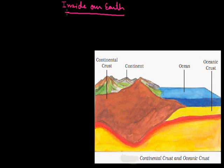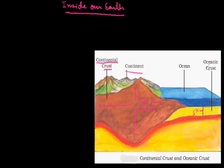Before starting the next topic, let us clear this diagram. As you can see here, this part of our earth is called the continental crust. Crusts are of two types — this one is the continental crust, which is under the continents, and its total depth is 35 km. On the other hand, the oceanic crust under the sea has a depth of only 5 km.